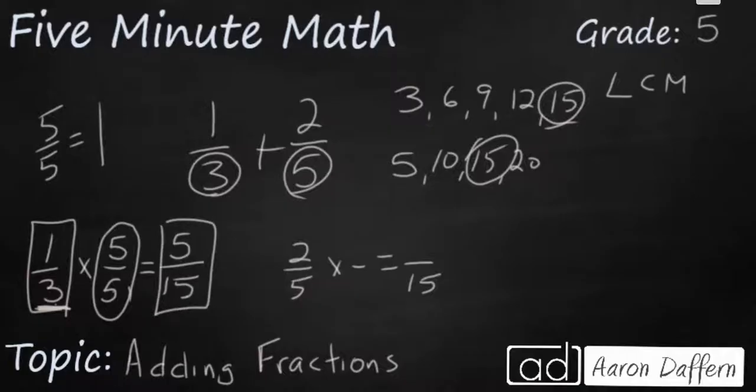Now we're going to do the same thing for two-fifths. Five times blank equals fifteen—you should know that five times three equals fifteen. This second fraction needs to be equal to one, so three-thirds is equal to one. If you multiply straight across, two times three makes six, so now I have two-fifths which is equal to six-fifteenths.